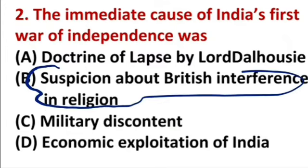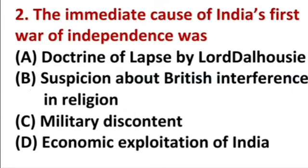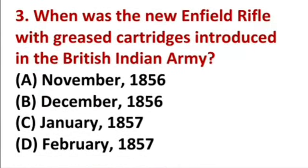This was the immediate cause of India's first war of independence. When was the new Enfield rifle with the greased cartridge introduced in the British Indian Army? November 1856, December 1856, January 1857, or February 1857?